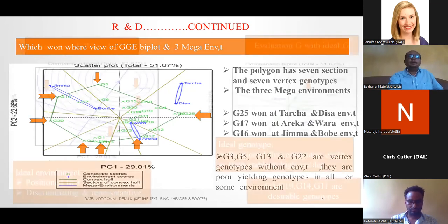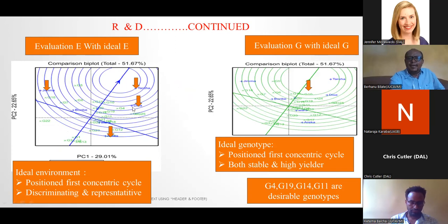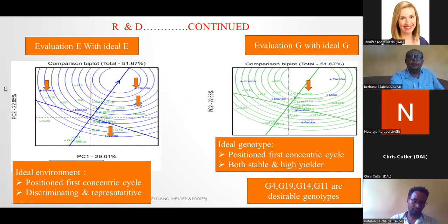For evaluation of environments with the ideal environment, the ideal environment is positioned on the first concentric circle. Tutcho is the ideal environment. There are desirable environments which are next to the ideal environment. Two environments are far away from the ideal environment — Jimma and Areka are less desirable for cassava production.